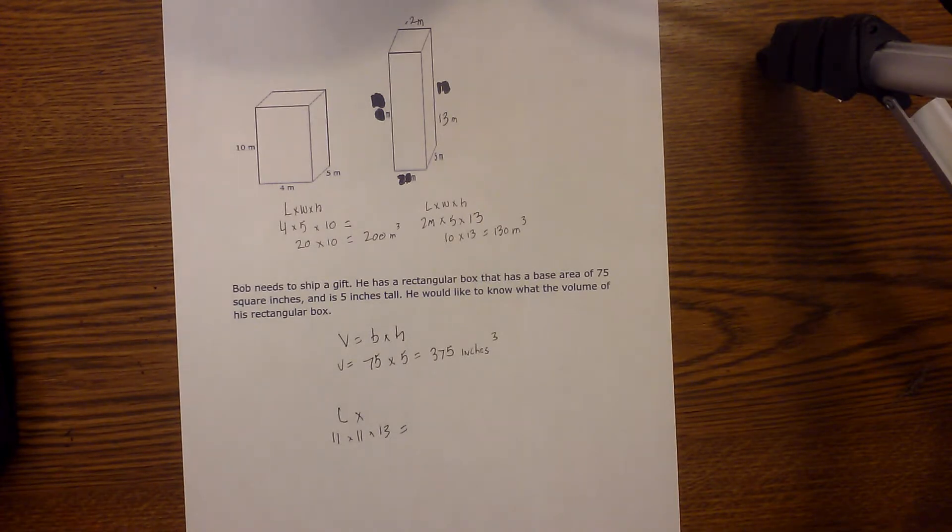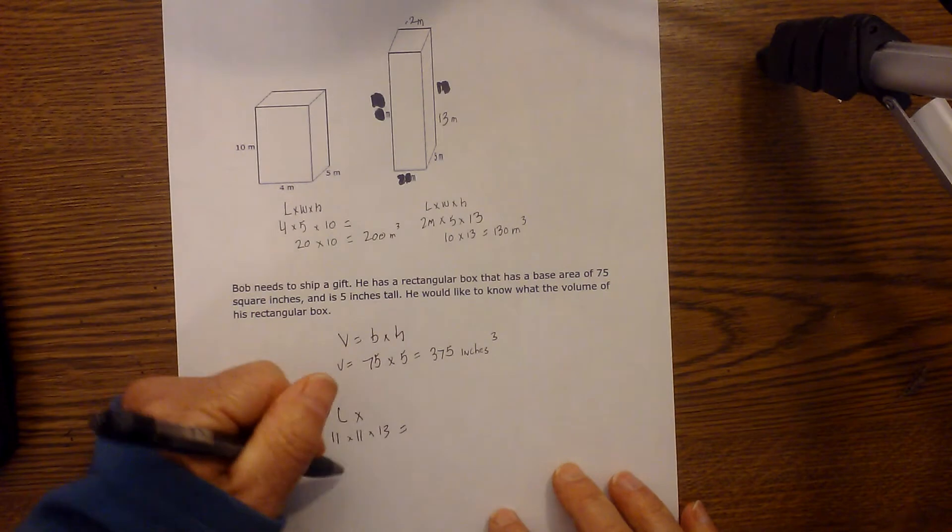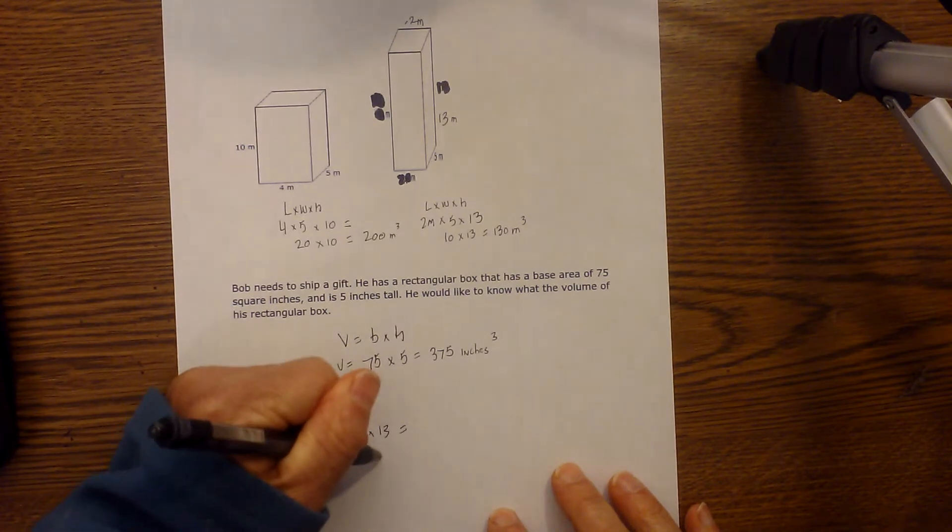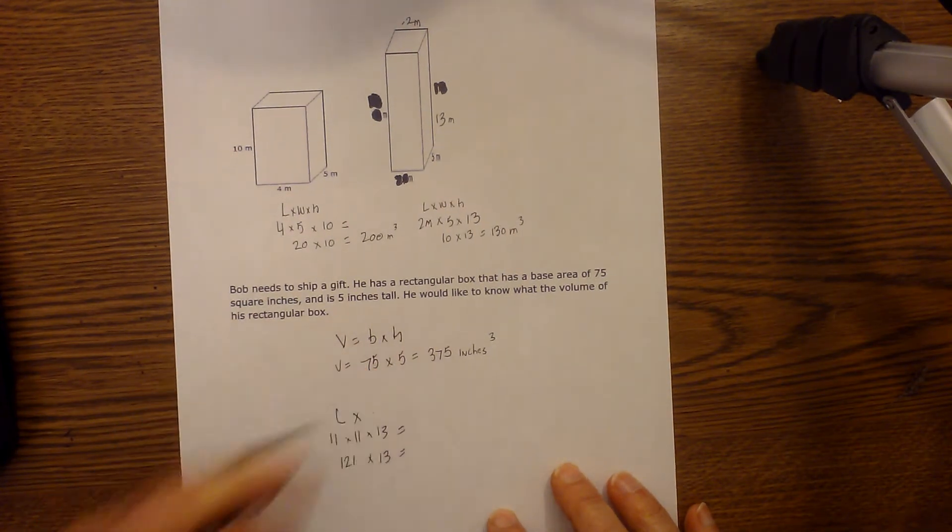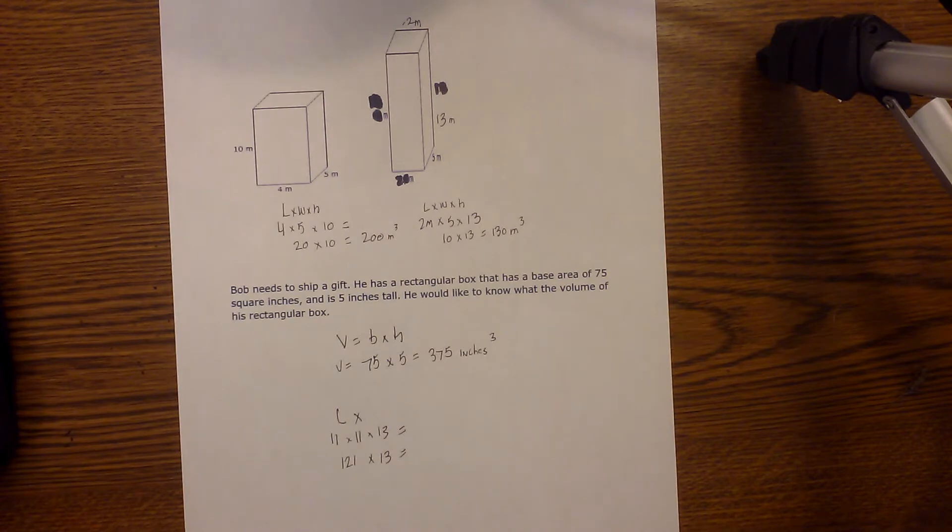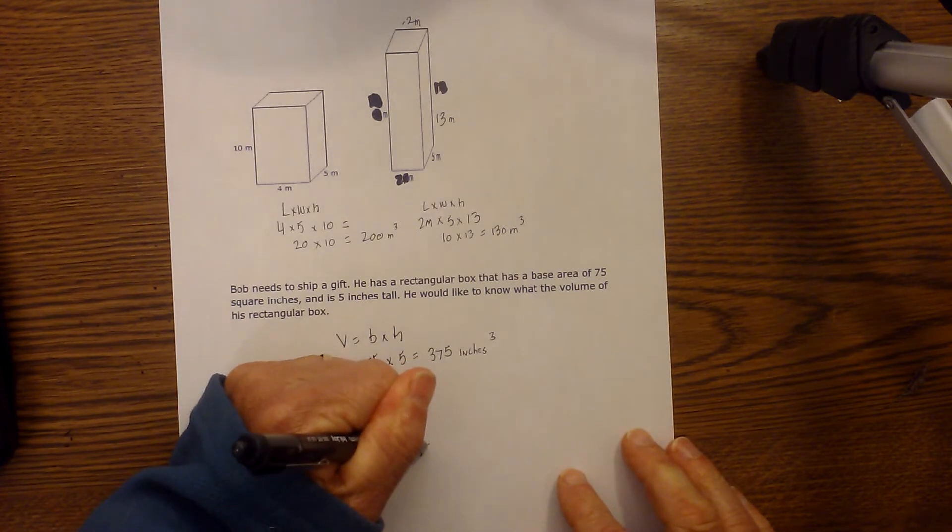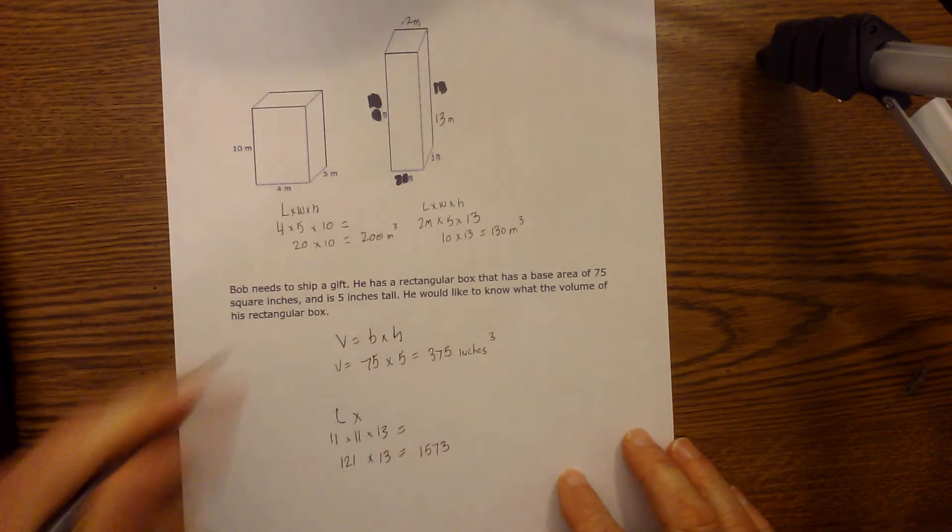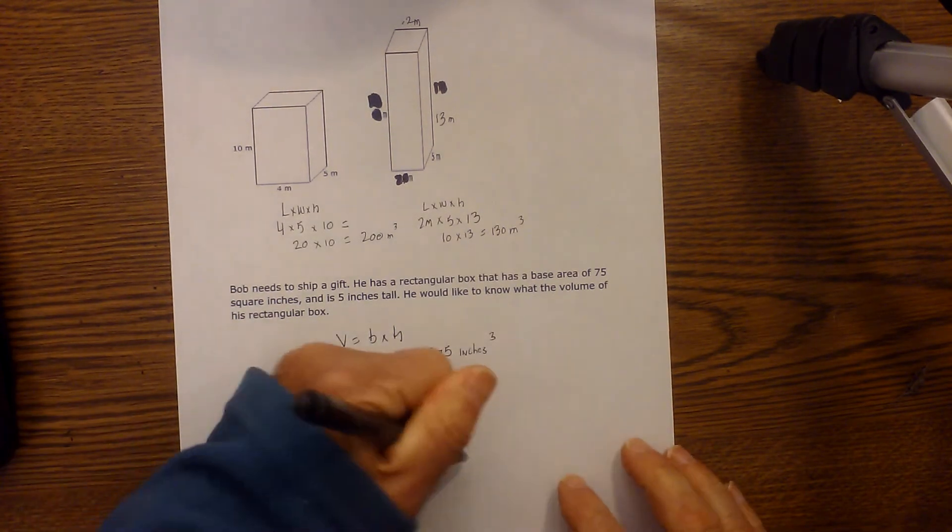And 11 times 11 is 121. And then 121 times 13. And just to speed things up, I'll go ahead and use a calculator here. And that is 1573. And so that would be centimeters cubed. So that would be the volume of this rectangular box, which is a rectangular prism.